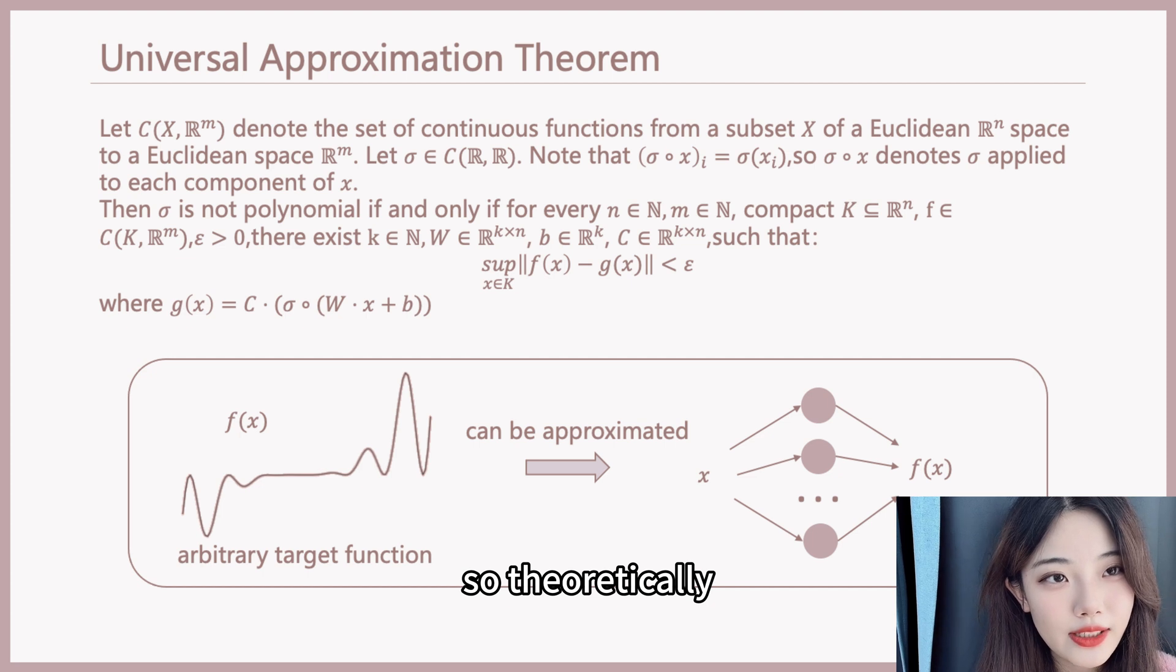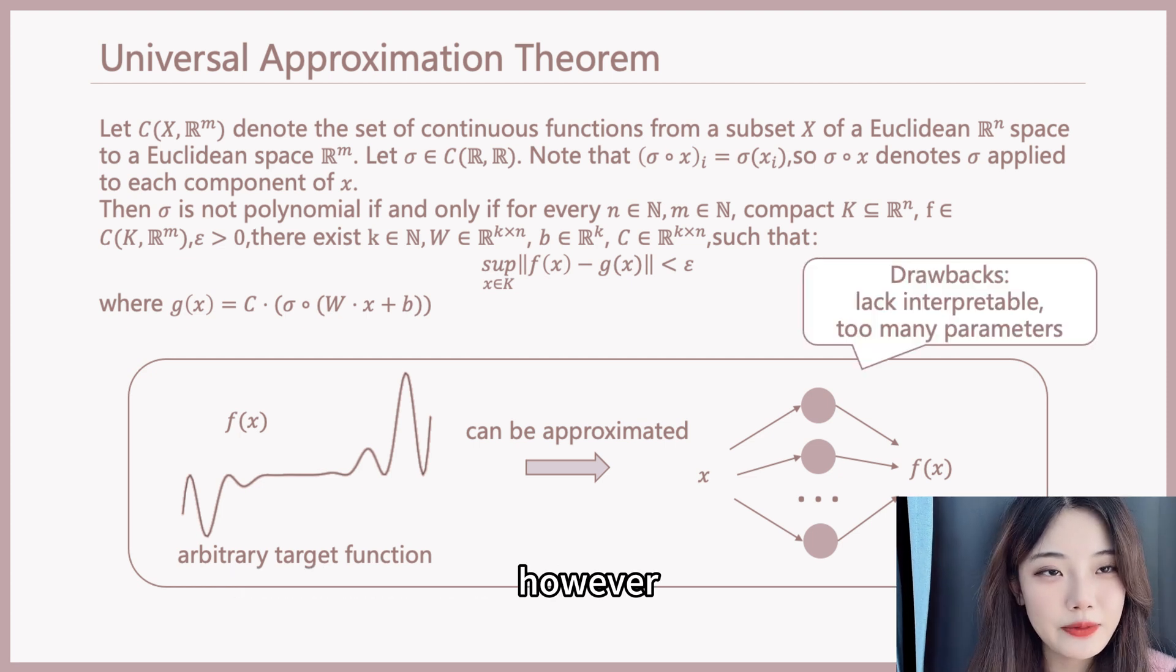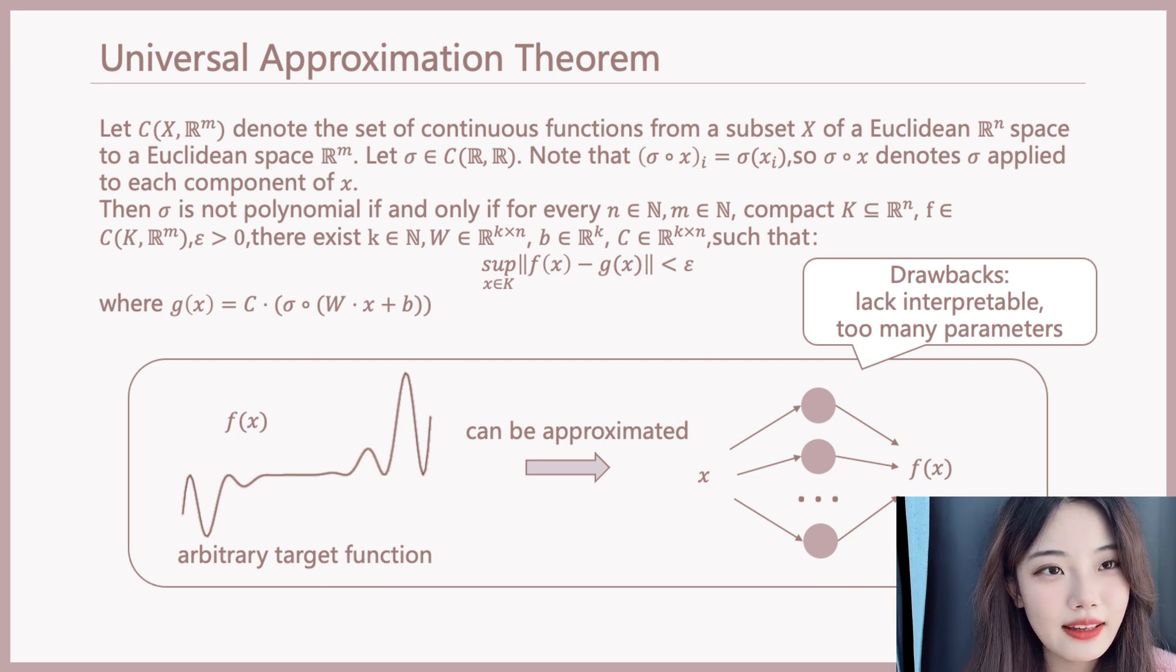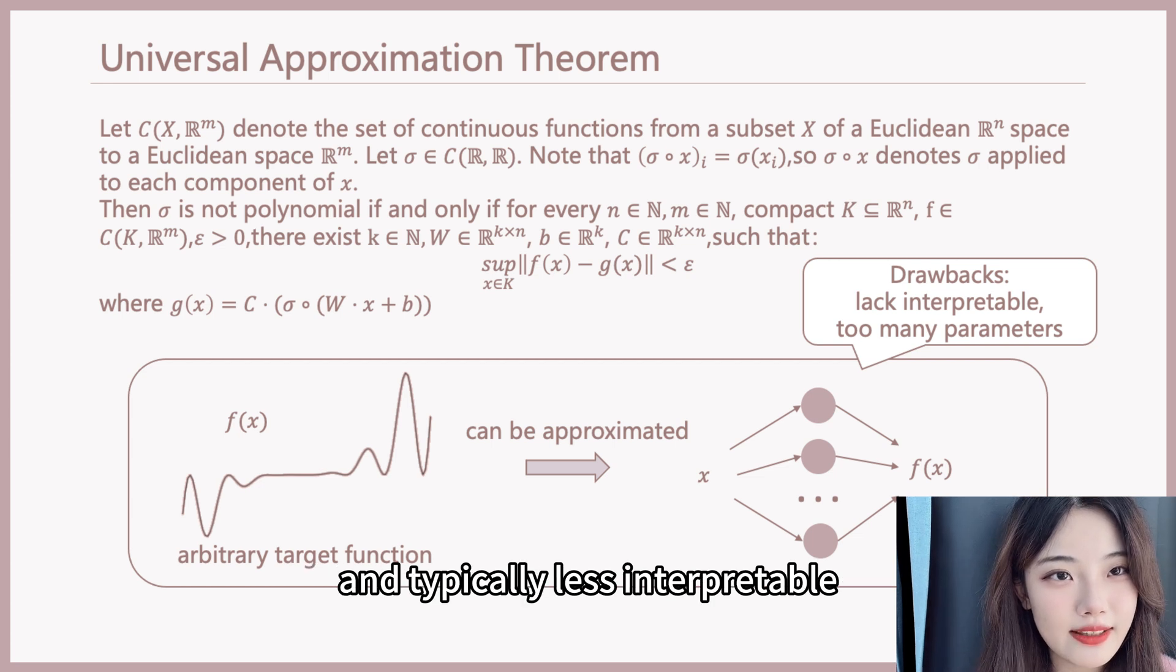So theoretically, neural networks can handle just any problem. However, MLPs have some drawbacks. In applications like transformers, MLPs consume too many parameters and are typically less interpretable.